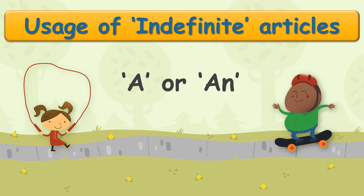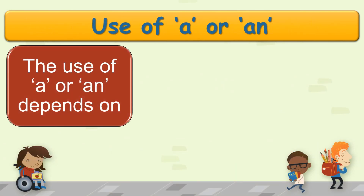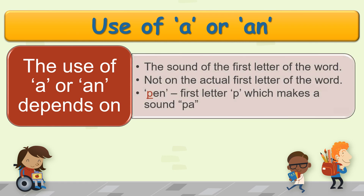Now let us know how to use them, beginning with the usage of indefinite articles, that is 'a' or 'an'. The use of 'a' or 'an' depends on the sound of the first letter of the word, and not on the actual first letter of the word. Yes children, on the sound of the first letter.